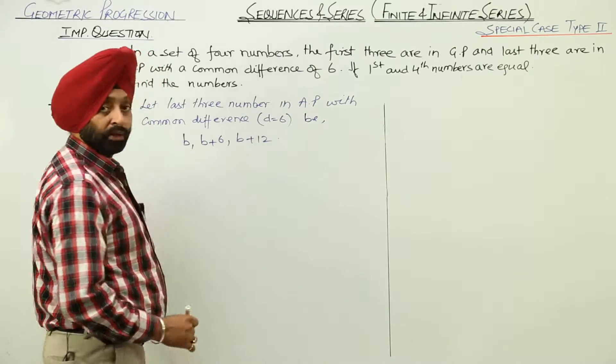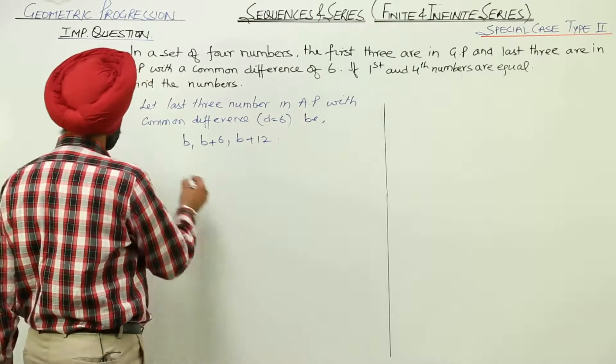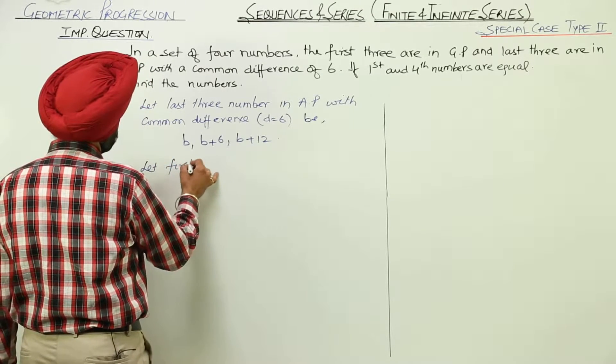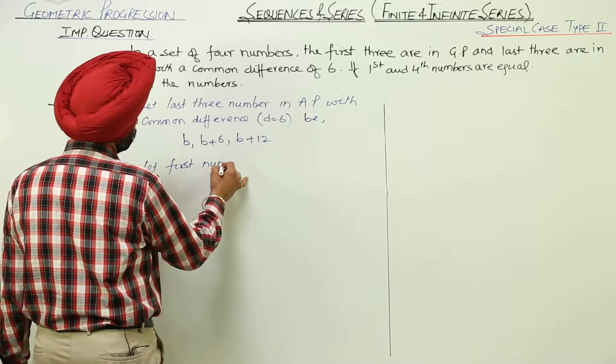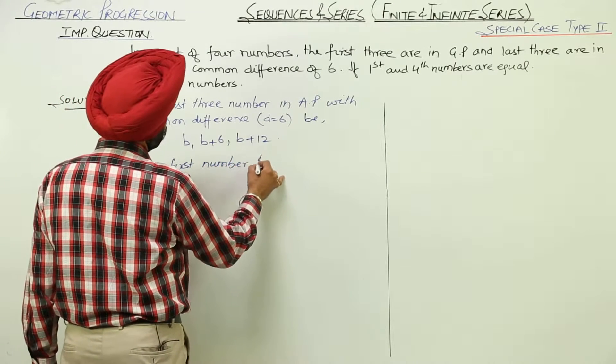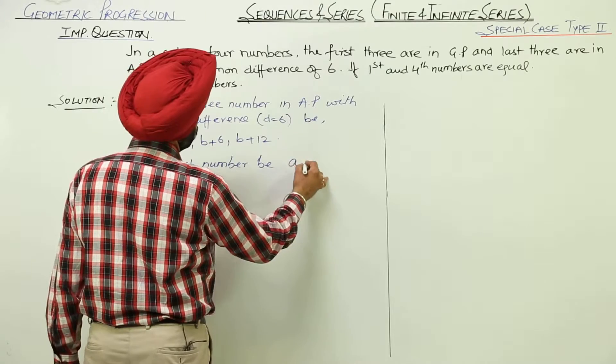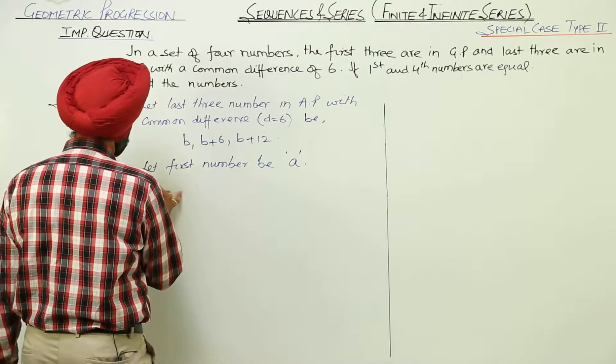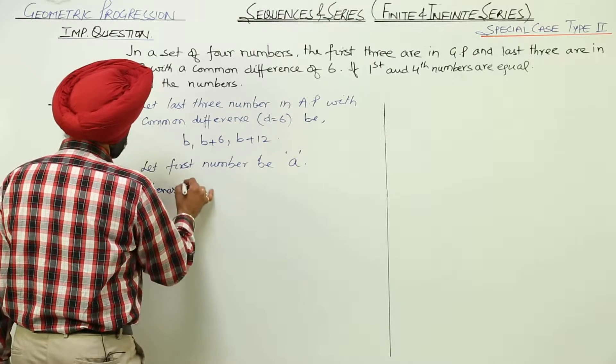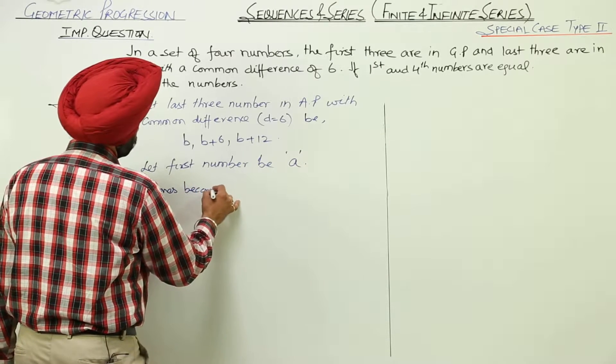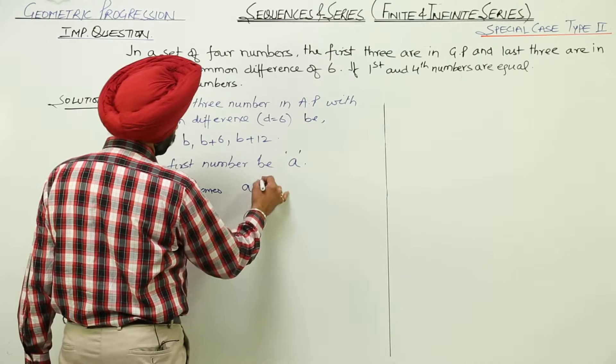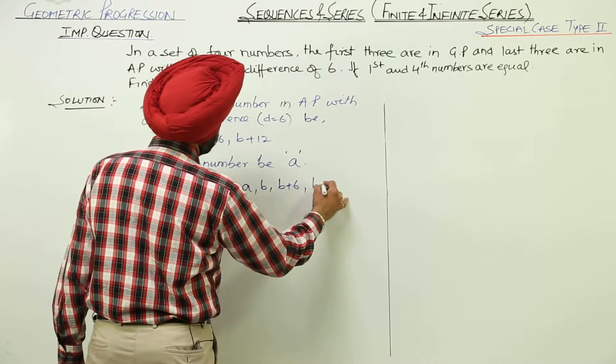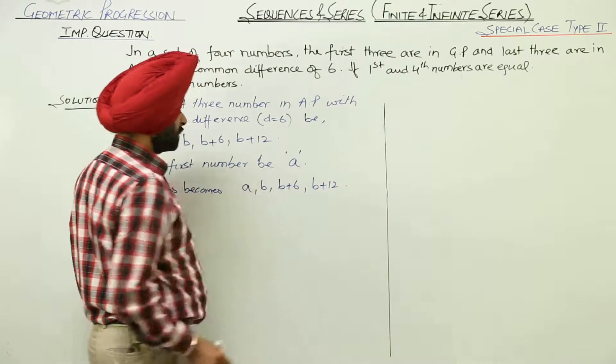These are the last 3 numbers. Now, let first number be A. We are taking first number as A. Now, series becomes A, B, B plus 6 and B plus 12. This is the series.